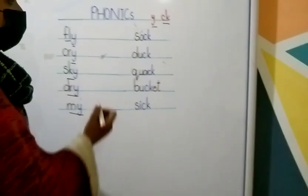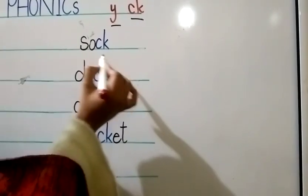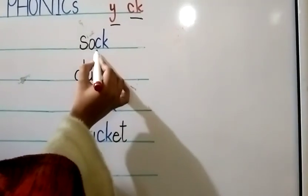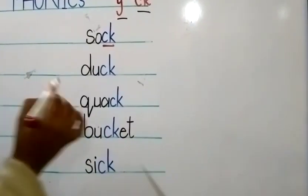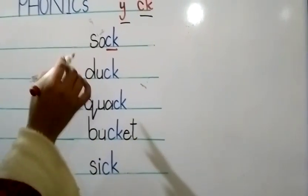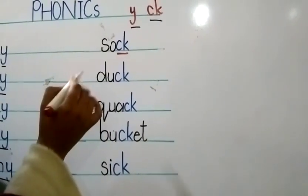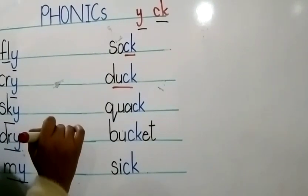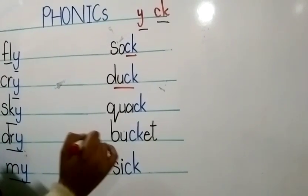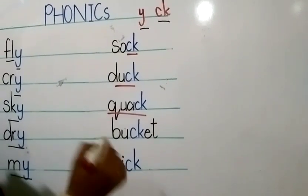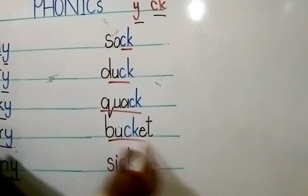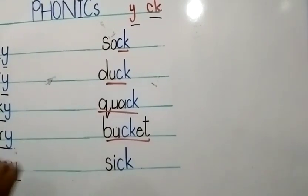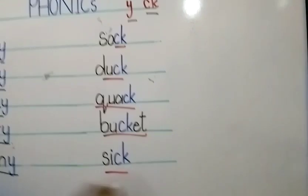On the other side, you can see the word SOCK — there is a K sound here. If I say S-O-C-K: SOCK. D-U-C-K: DUCK. Q-U-A-C-K: QUACK. B-U-C-K-E-T: BUCKET. S-I-C-K: SICK.